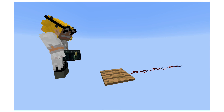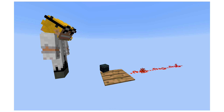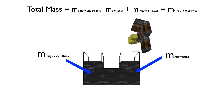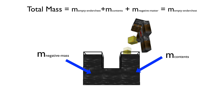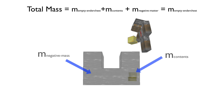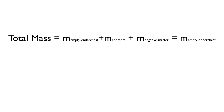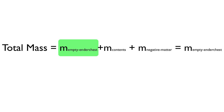Many of you have been asking how a massless ender chest can both fall and activate a pressure plate. After thinking about it for a while, I came up with a refinement to my original theory. The mechanism can still be thought of in terms of the manometer, but the key here is that the eye of ender makes the mass of all the contents of an ender chest zero kilograms. This solves all the paradoxes shown in the video, but still gives the ender chest itself some intrinsic mass.